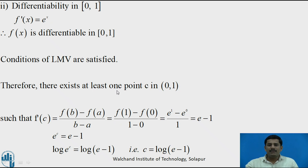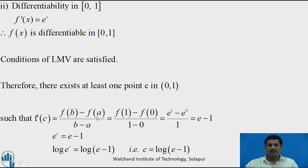Therefore by this theorem, there exists at least one point c between 0 and 1 such that f'(c) = [f(b) - f(a)] / (b - a). Here a = 0 and b = 1, so substituting we get f'(c) = [f(1) - f(0)] / (1 - 0). Since f(x) = e^x, this becomes [e^1 - e^0] / 1 = e - 1.